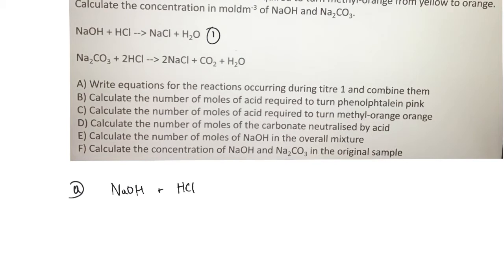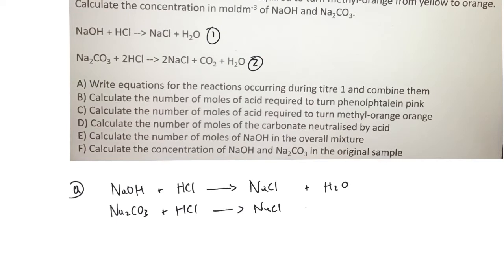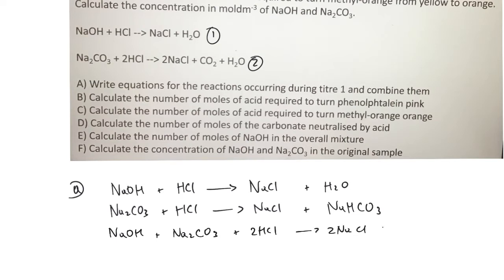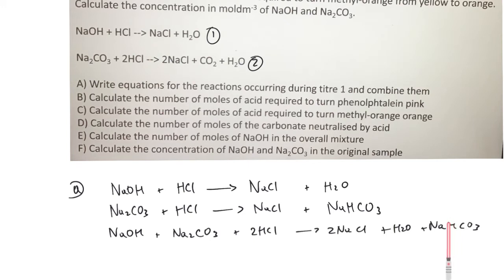NaOH is added to hydrochloric acid and we form a salt and water. Because reaction 2 requires two moles of acid, it happens in two parts: the sodium carbonate becomes sodium chloride and sodium hydrogen carbonate. Combining these, in the initial titration we form water and sodium hydrogen carbonate. We neutralize all of the sodium hydroxide, provide one mole to the sodium carbonate, and leave one mole of sodium hydrogen carbonate yet to be neutralized. That's what's happening in Titer 1.